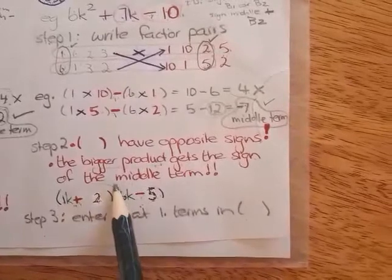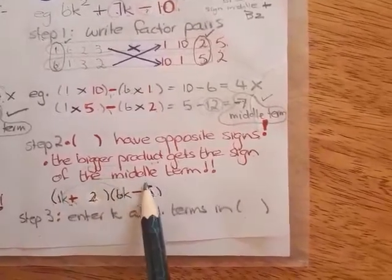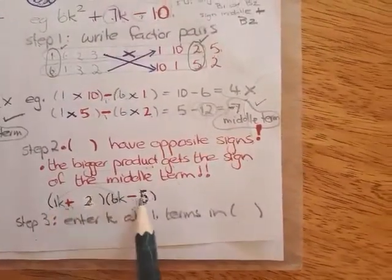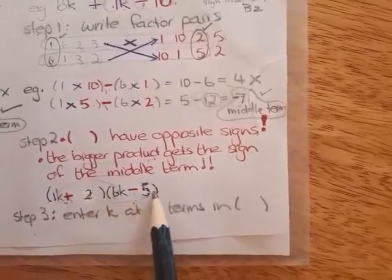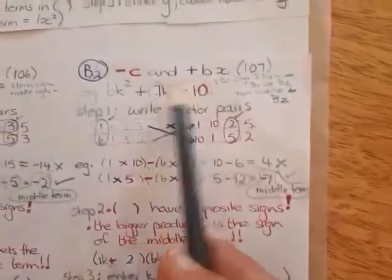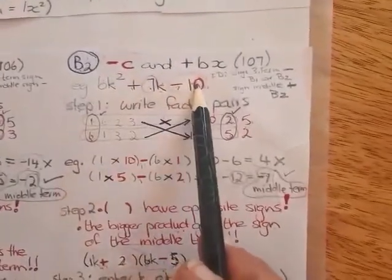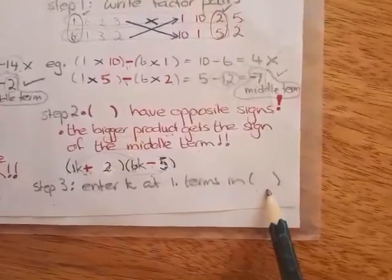And again, people, if you now multiply out first term times first term, first term times second term, second term times first term, second term times second term, you actually should get the whole of these coefficients.